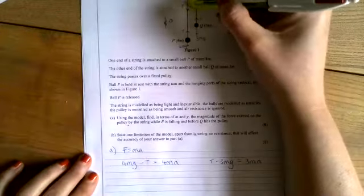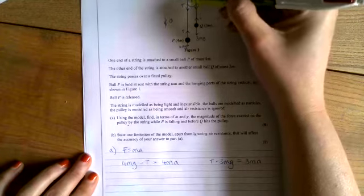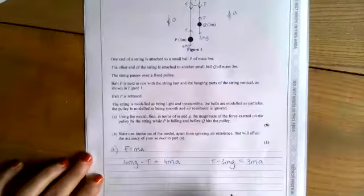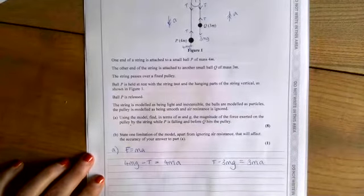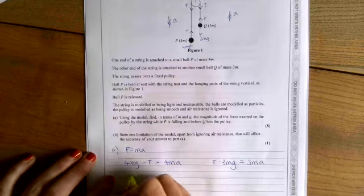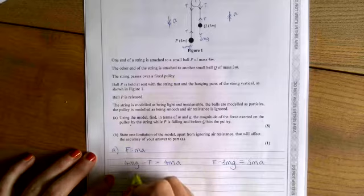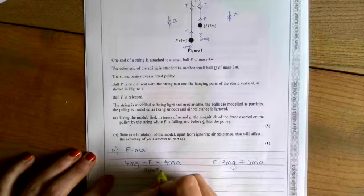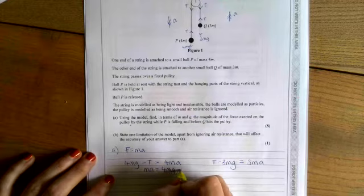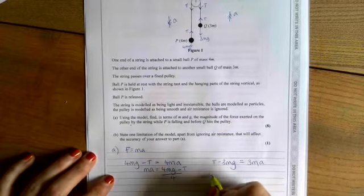I'm trying to find T so that I can take 2T acting down on the pulley. So let's rearrange this one. If I rearrange that to make MA the subject, MA equals 4MG minus T over 4. And I'm going to substitute that in there.